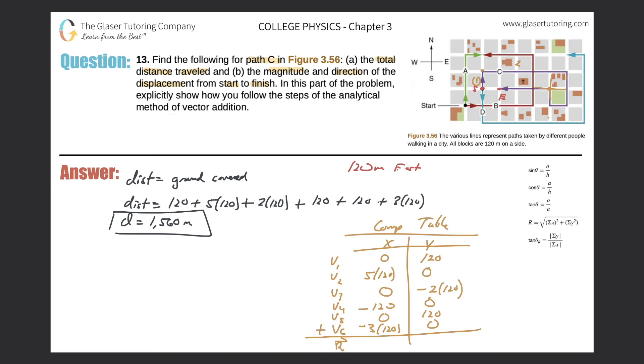And what do you get? You got 120. Great. And now how about the y? 120 plus zero minus 2 times 120 plus zero plus 120 plus zero is zero. So these are the components of your resultant vector.